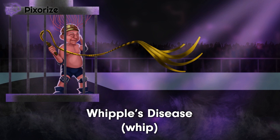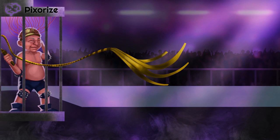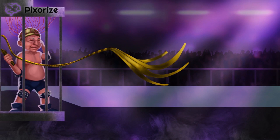No good rave is complete without ample lighting, and I only go to raves with black lights, which are obviously purple. The tasteful subtle glow from the club's black lights makes the image overwhelmingly purple. What could the color purple represent in a micro video? The purple color here represents gram-positive staining, which is fitting because Tropheryma whipplei is gram-positive.